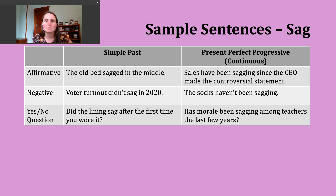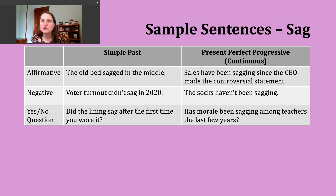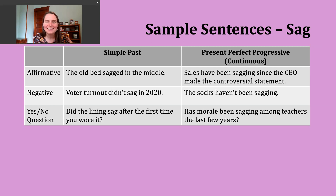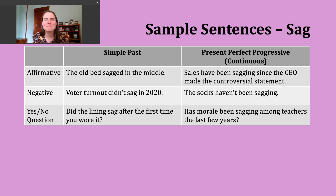To make a negative present perfect progressive sentence, pay attention to your subject, then use 'have not' or 'has not' (or the contractions 'haven't' or 'hasn't'), the participle 'been,' and then the -ing form of the verb. An example: 'The socks haven't been sagging' — talking about something not hanging loosely or not failing to stay up on one's leg.